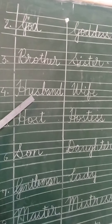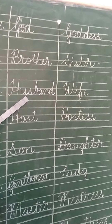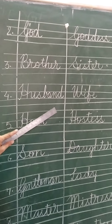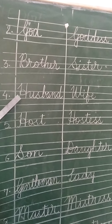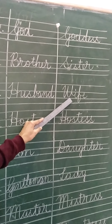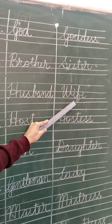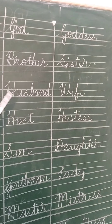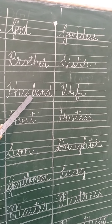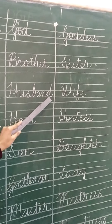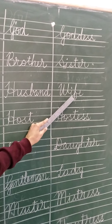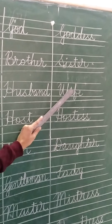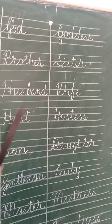Then husband. Your father is the husband of your mother. And wife — your mother is the wife of your father. H-U-S-B-A-N-D — husband. W-I-F-E — wife.